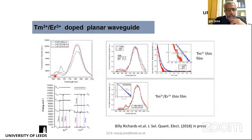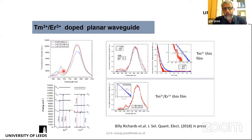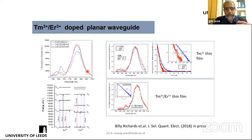Currently, optical communication wavelengths are mostly around 1550 nm with a bandwidth of about 30–40 nm. As data requirements keep increasing, we will probably need to use longer and shorter wavelength ranges for amplification as well. That is where these co-dopants are becoming important for the future of optical communication.